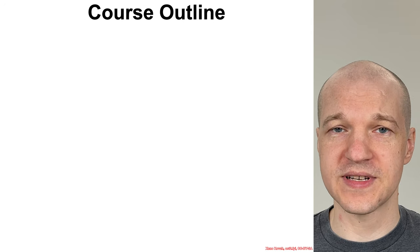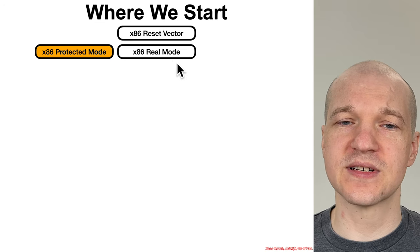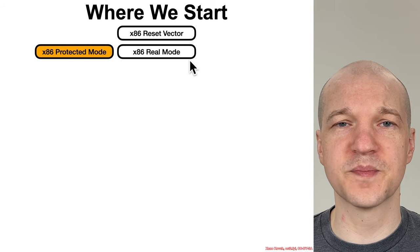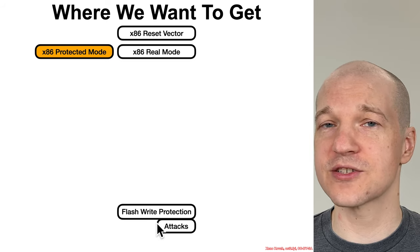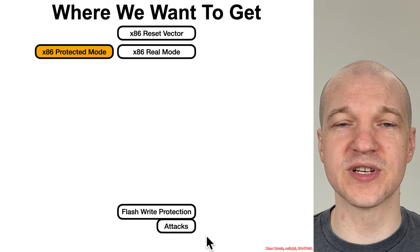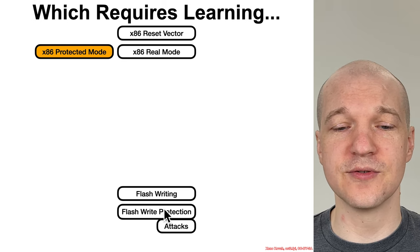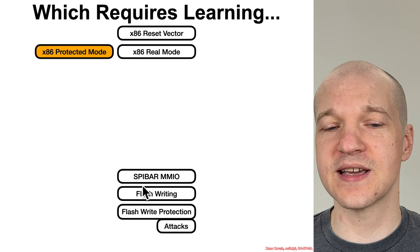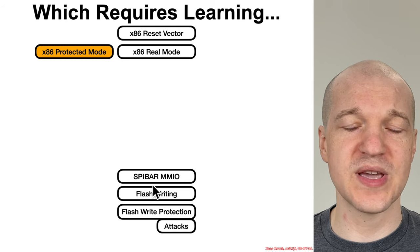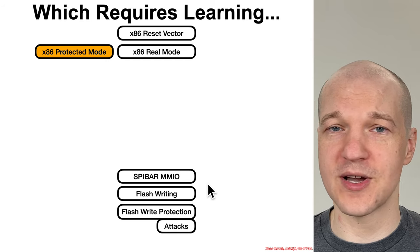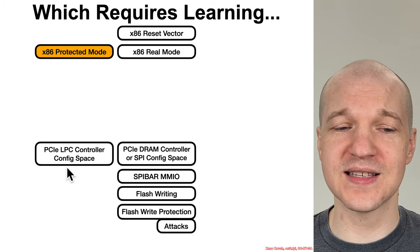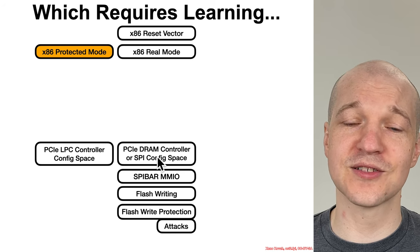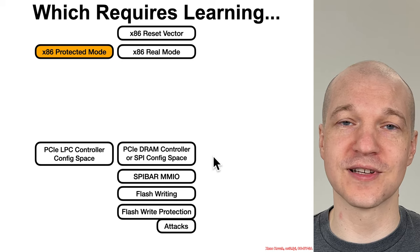Let's talk about the outline for this class. We're going to start by covering the reset vector, real mode, protected mode, and processor execution modes. From there we work down to flash write protection and the attacks that could potentially bypass it. To understand that, you need to understand flash writing, which requires understanding the SPI base address registers and memory mapped IO — specifically where certain memory mapped IO registers exist. To understand that, you have to understand PCIe, LPC controller configuration address space, and potentially the DRAM controller or SPI controller configuration address space.